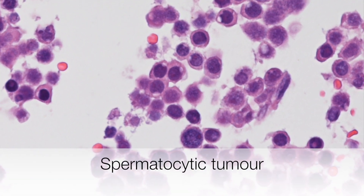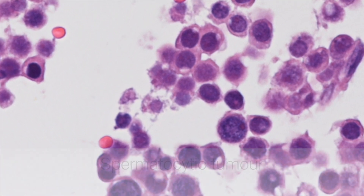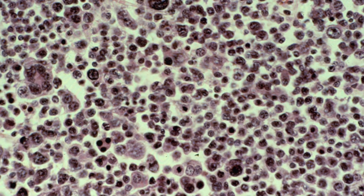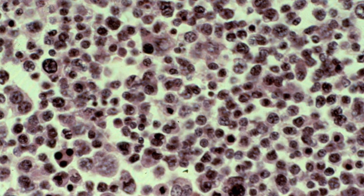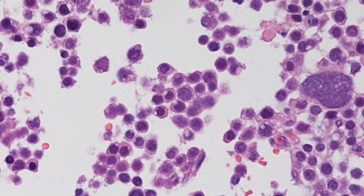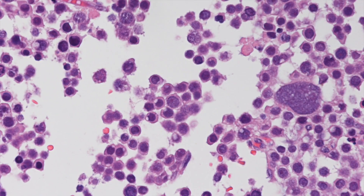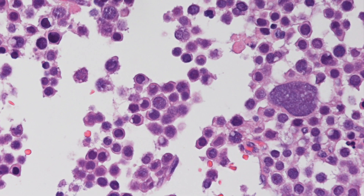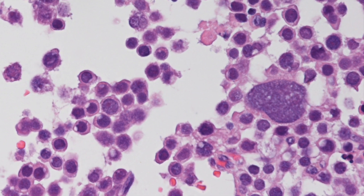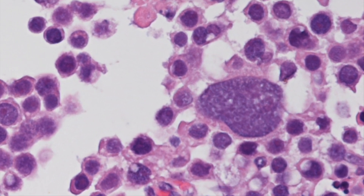The spermatocytic tumour of the testis, also known as spermatocytic seminoma, is another good example of a tumour characterised by cells exhibiting polymorphism. There are three types of cells: small cells resembling lymphocytes, intermediate sized cells, and enormous cells. Because the variation in the size of these cells occurs at different stages of development, they are described as polymorphic and not pleomorphic.